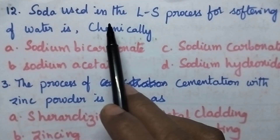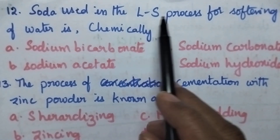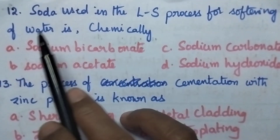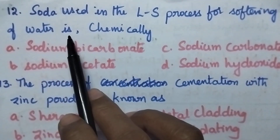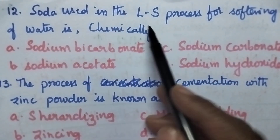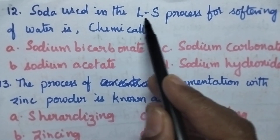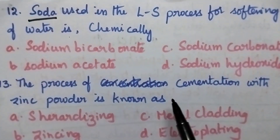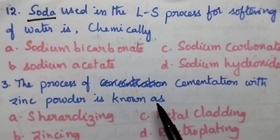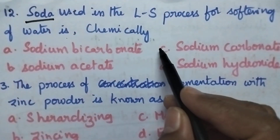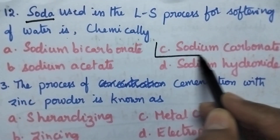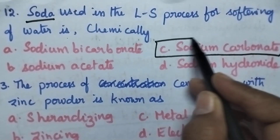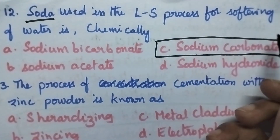The soda used in the lime-soda process for softening of water is chemically nothing but sodium carbonate. Option C — sodium carbonate — is the right answer.